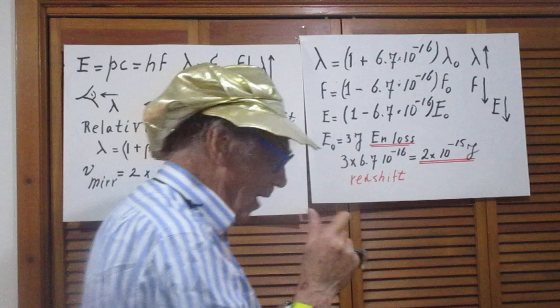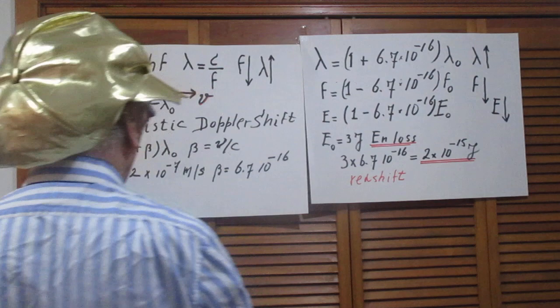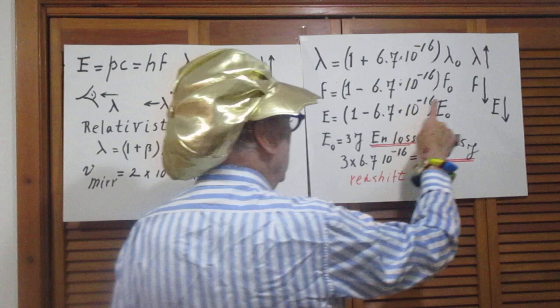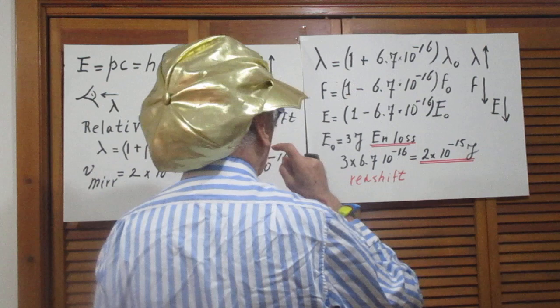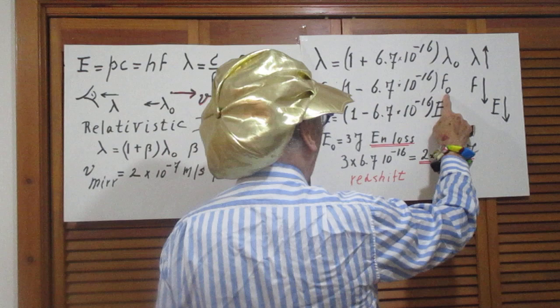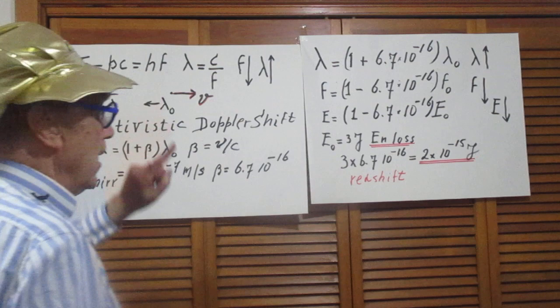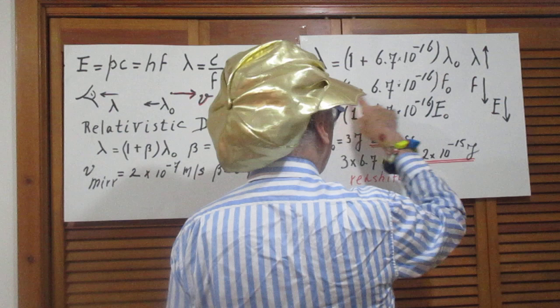So that means that the wavelength that I will receive is larger than lambda zero, 1 plus beta. 1 plus beta. So the frequency is lower by 1 minus beta times F zero. Remember, if F goes up lambda goes down. If lambda goes down, F goes down. So this frequency is lower than F zero, this wavelength is larger than lambda zero. So the energy, which is linearly proportional to the frequency, will also go down by the same fraction as the frequency goes down.